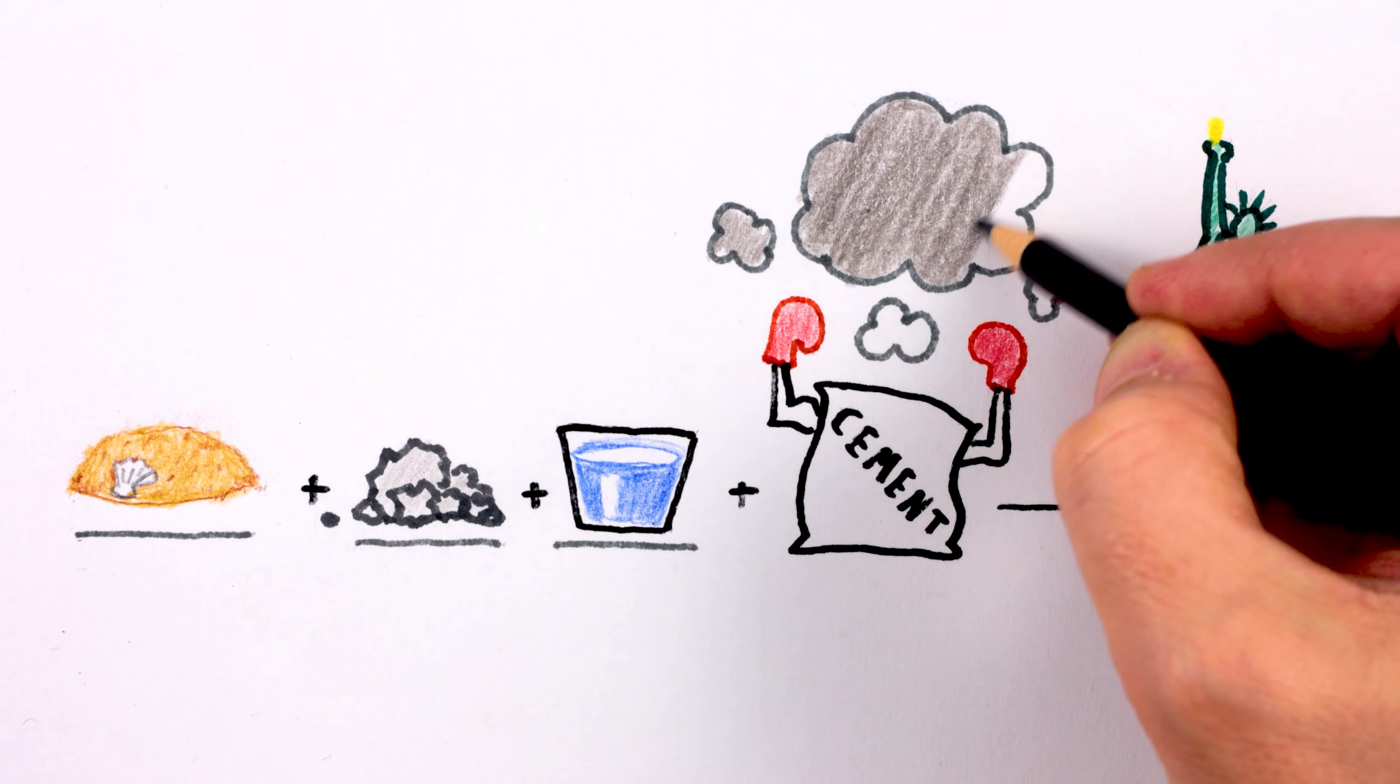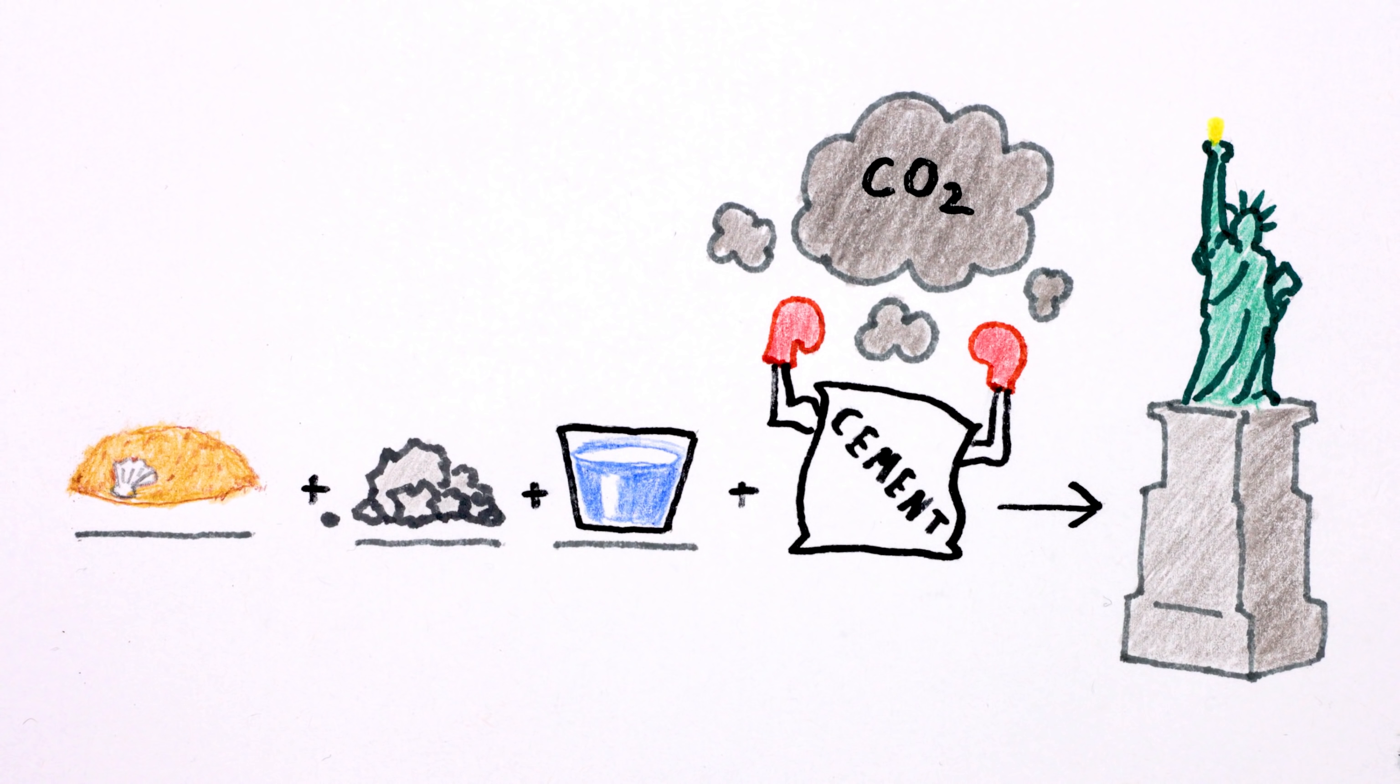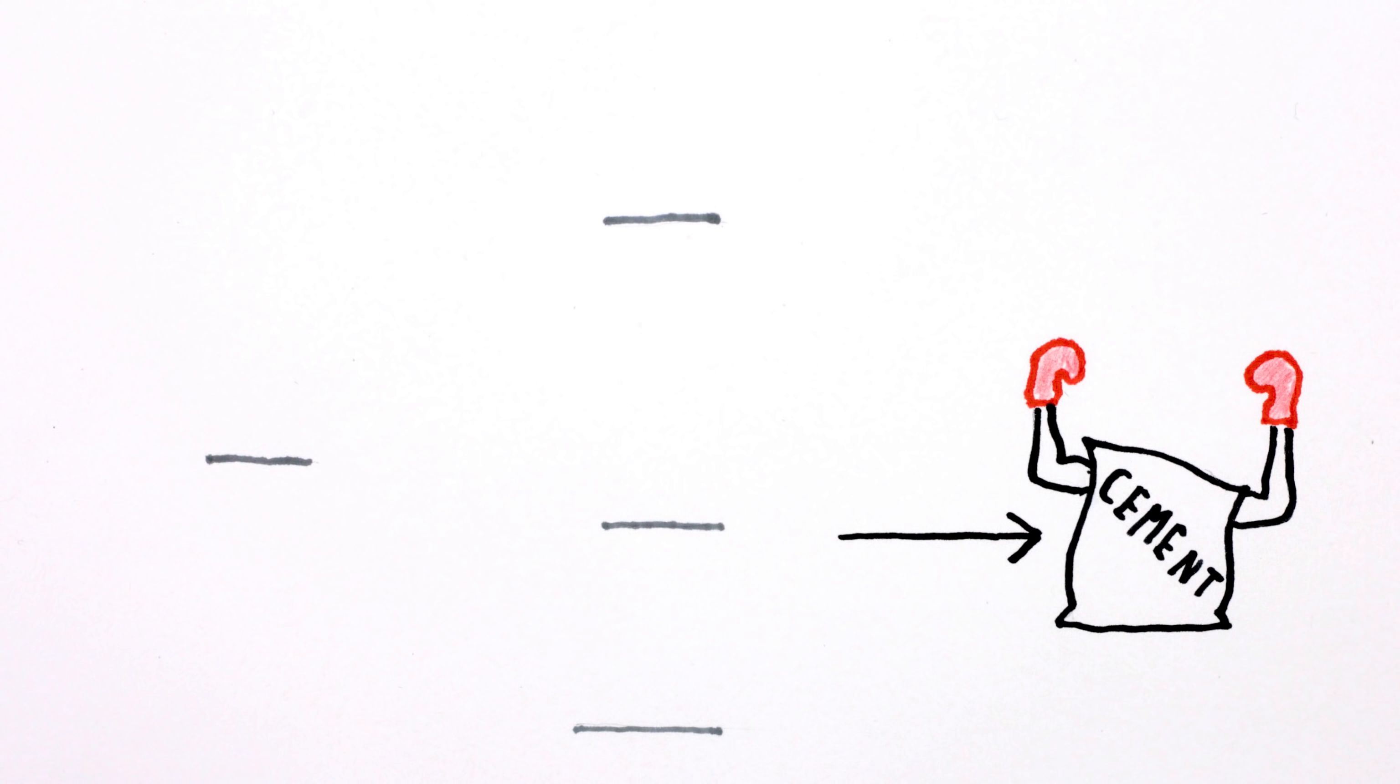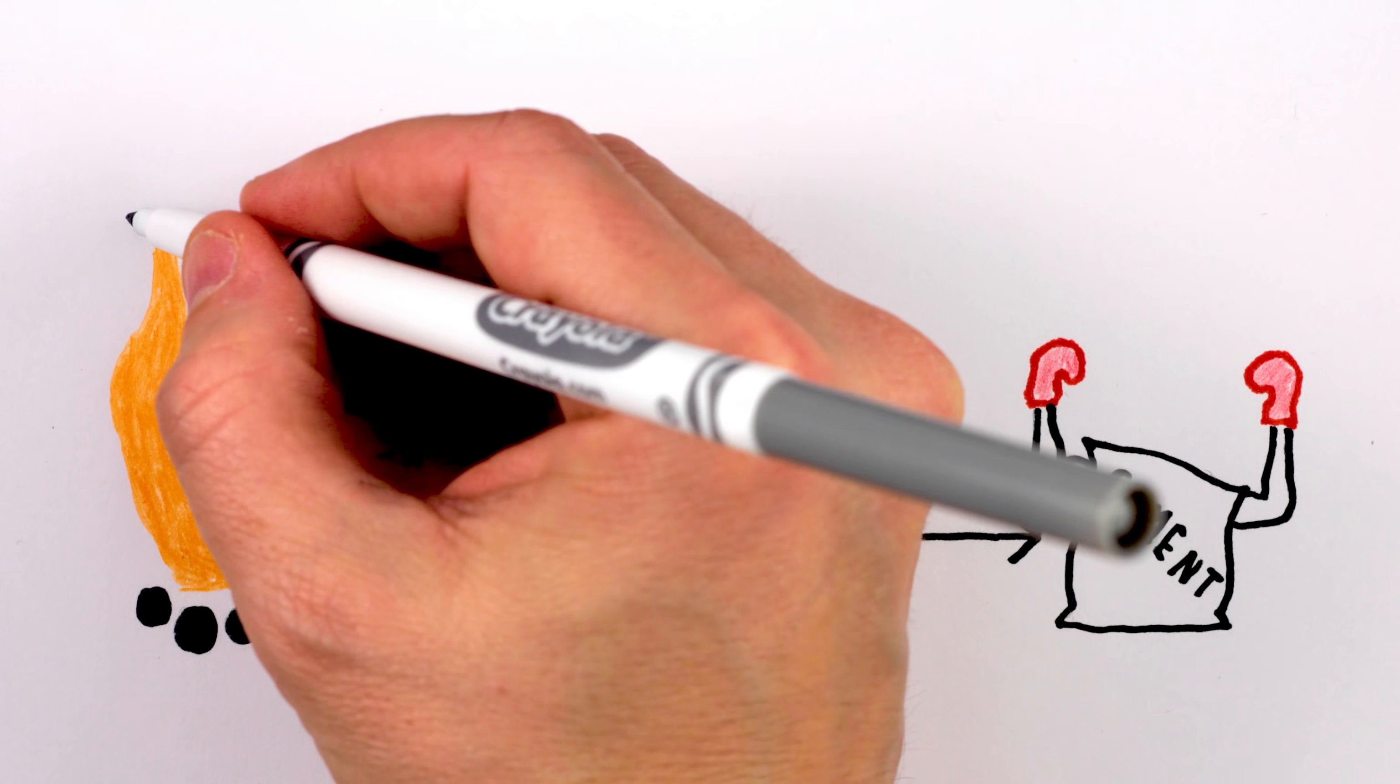And it's a mean source of planet-warming carbon dioxide. Cement's one-two punch comes from how it's made. First, we have to heat limestone, which typically requires us to use lots of fossil fuels, which emits CO2.